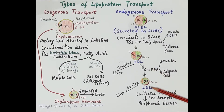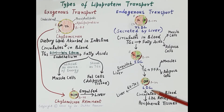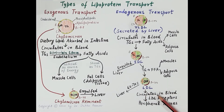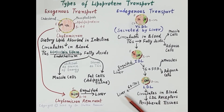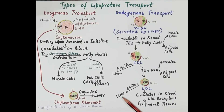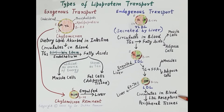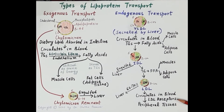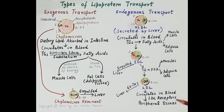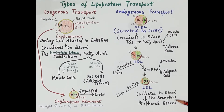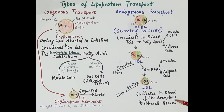After further hydrolysis of triglycerides, IDL becomes LDL. LDL primarily consists of cholesterol esters with only a very insignificant quantity of triglycerides. About 60 to 70 percent of LDL is engulfed by the liver, while the rest circulates in the blood and reaches peripheral tissues. The cells of peripheral tissues express LDL receptors, and LDL binds to these receptors, resulting in the uptake of LDL by the peripheral tissues.